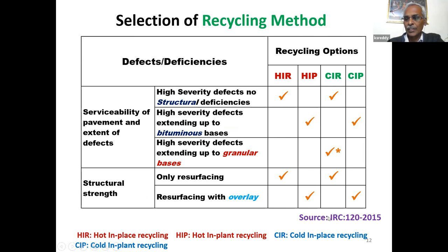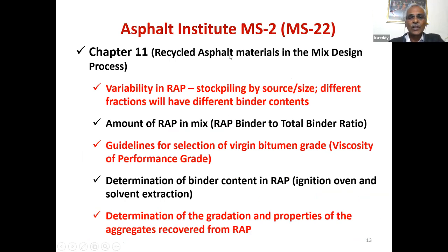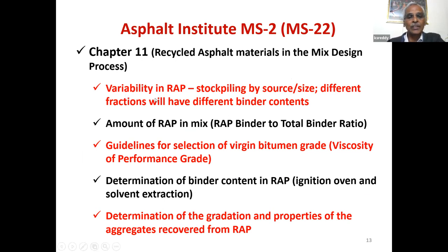These are the options recommended in IRC 120 depending on the present condition of the road — whether defects are surface or full depth, and the extent of distress in terms of rut depth, roughness, and other parameters. Some cases only hot in-place recycling is suitable; other cases plant recycling is okay; some cases you can only go for cold in-place recycling. The Asphalt Institute MS2 provides guidance — you could also refer to MS22 for greater details. Chapter 11 is dedicated to recycling of different materials and highlights the importance of understanding variability in RAP material and the importance of stockpiling by source as well as by fractionation.